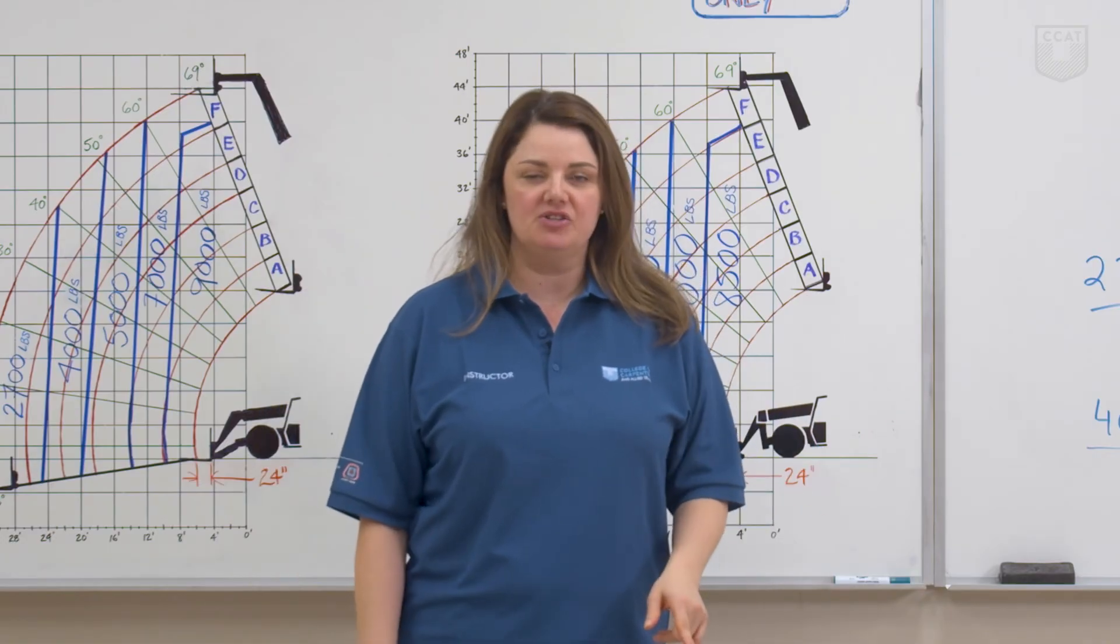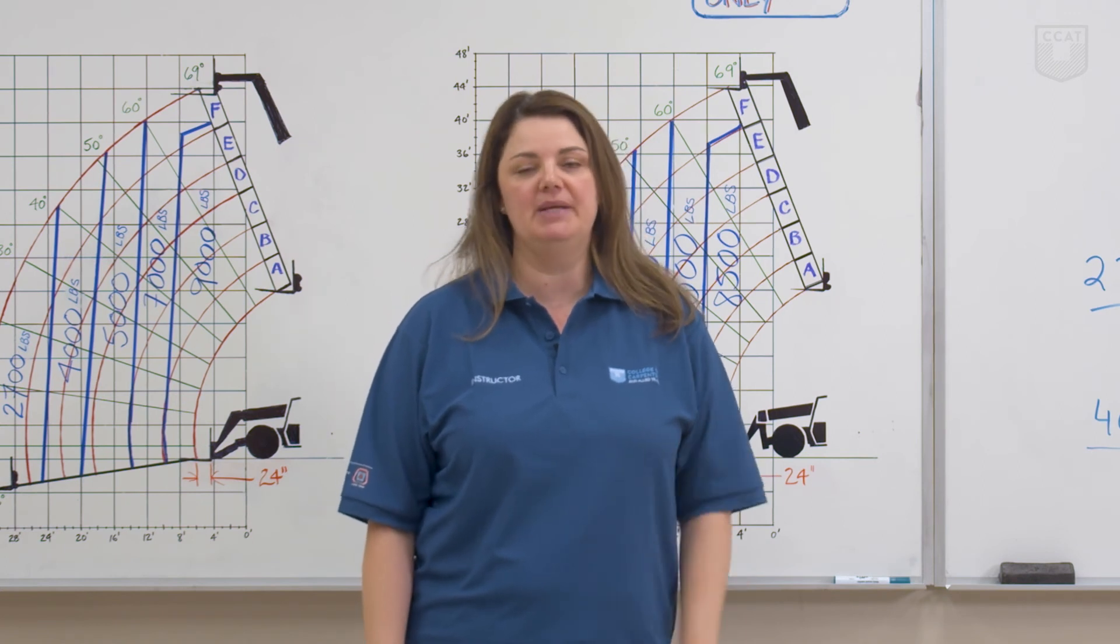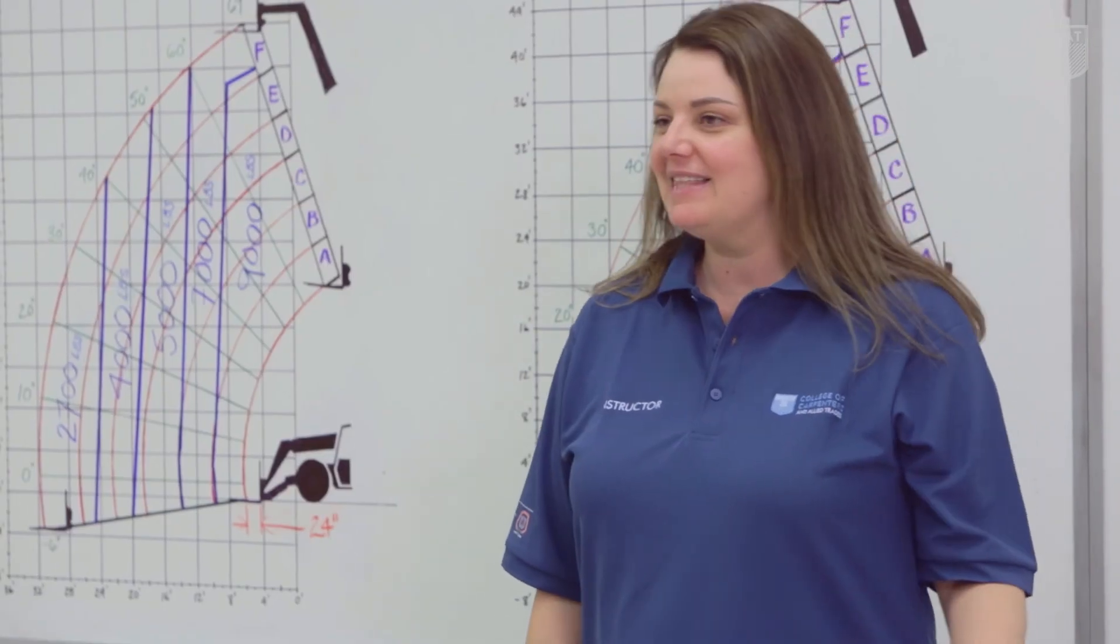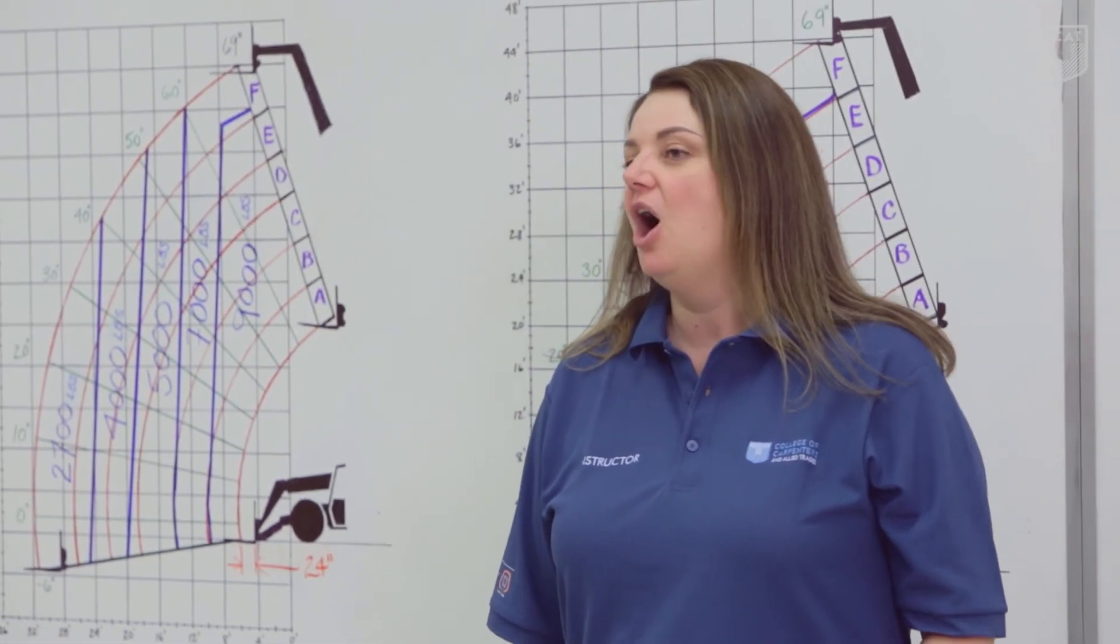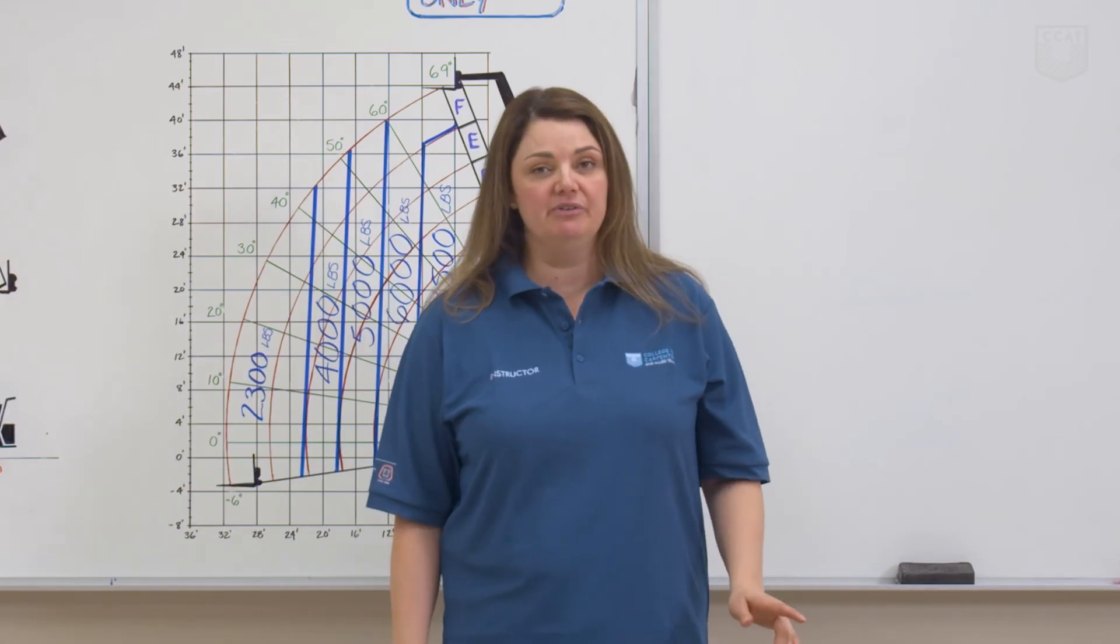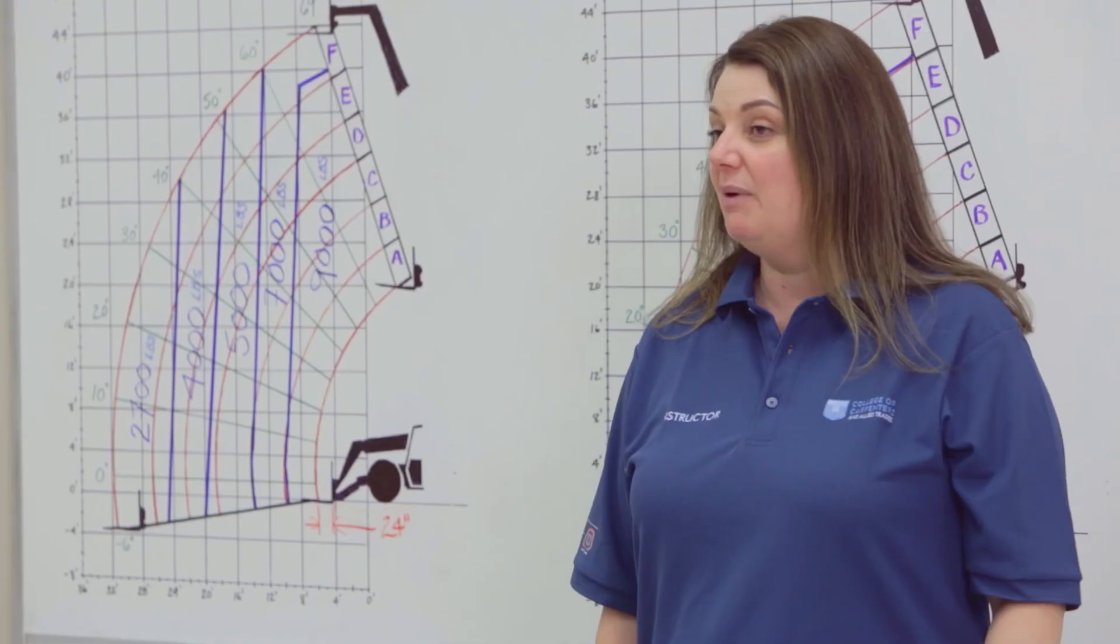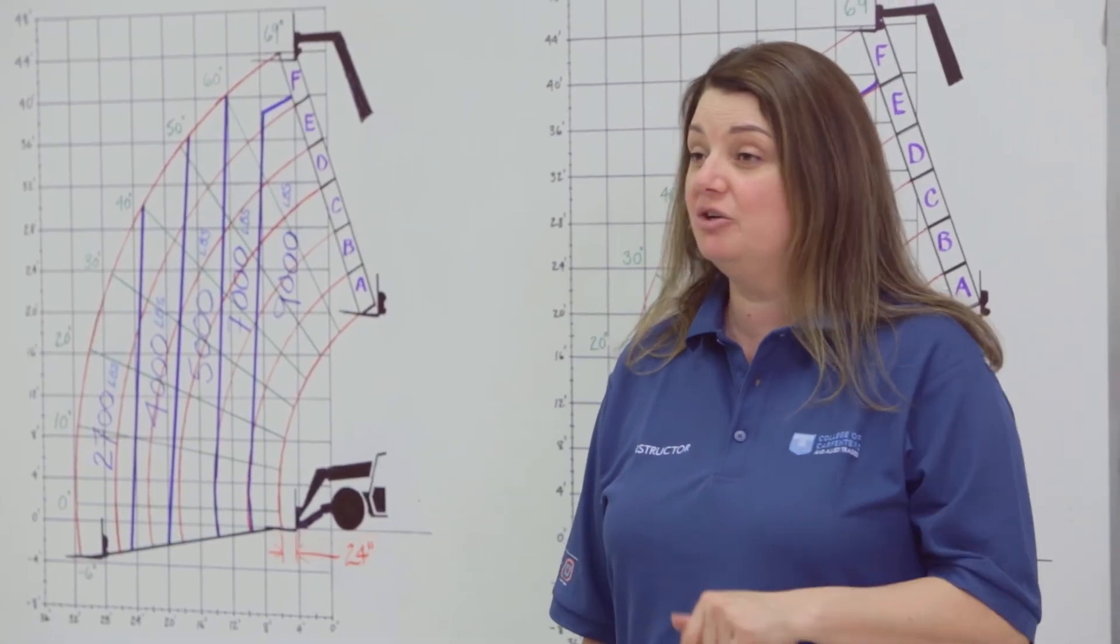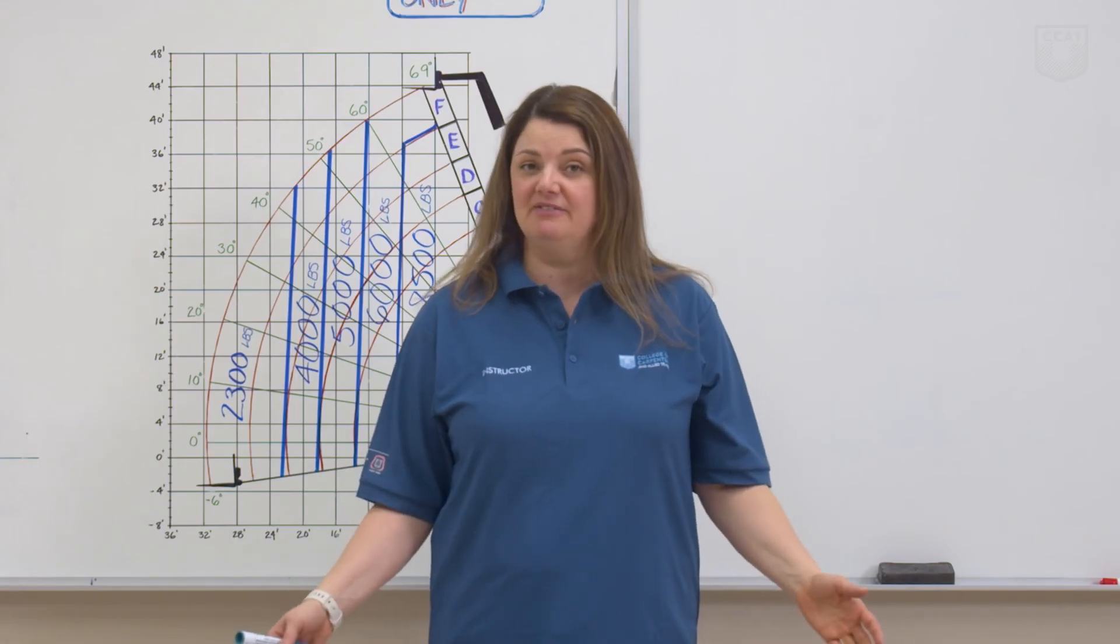Once again, these are field calculations. These should never supersede load charts or manufacturer's recommendations. In this last job site scenario, we're asked to move a 7,000 pound load on a 48 by 48-inch skid. We know that we're at a 24-inch load center. We also know that the capacity for the machine is 9,000 pounds. However, we inquire and find out that the new concrete floor is rated for 10,000 pounds. Can we make this lift happen?